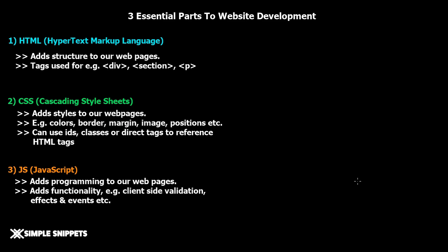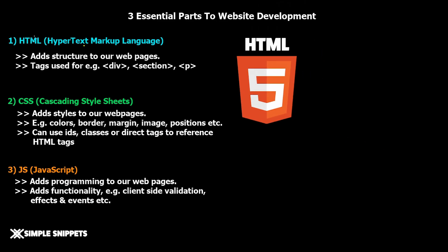When we start off with web development, developing a website from scratch, there are three main aspects to a basic website. First, we have HTML — HyperText Markup Language — which adds structure to our web documents. We use tags such as division, section, heading, and title. HTML is not a general-purpose programming language; you cannot use if-else, inner returns, or object-oriented properties. It is just a markup language used to give structure to our web document.